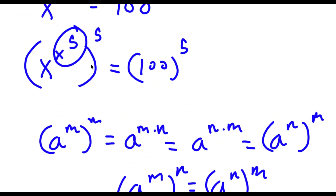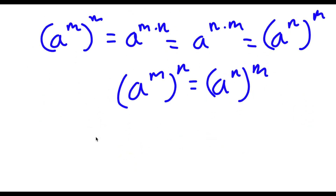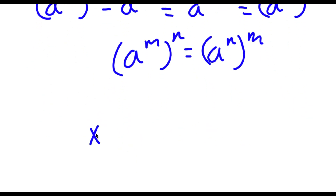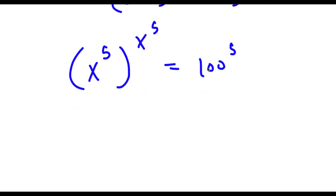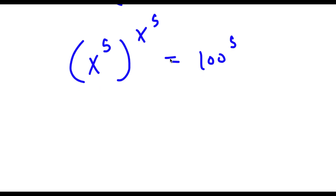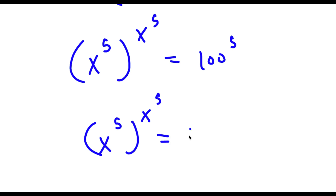So in this case we can think of x to the power of 5 as m and 5 as n. If I switch those two places I get x to the power of 5 to the power of x to the power of 5, is equal to 100 to the power of 5. Now 100 I can rewrite as 10 to the power of 2, so now I have x to the power of 5 to the power of x to the power of 5 is equal to 10 to the power of 2 to the power of 5.